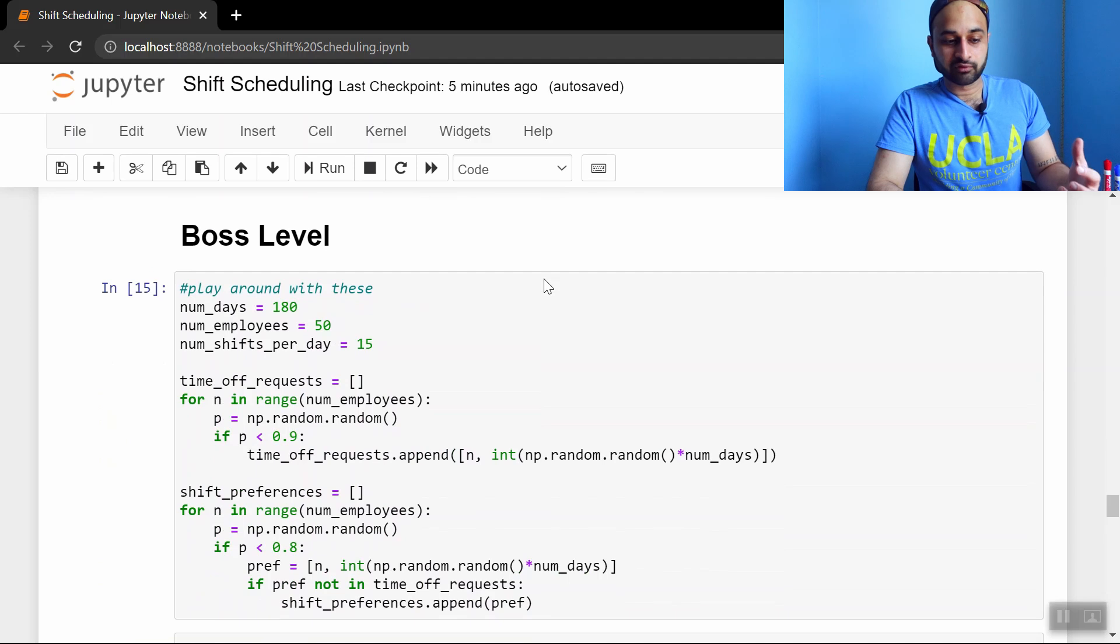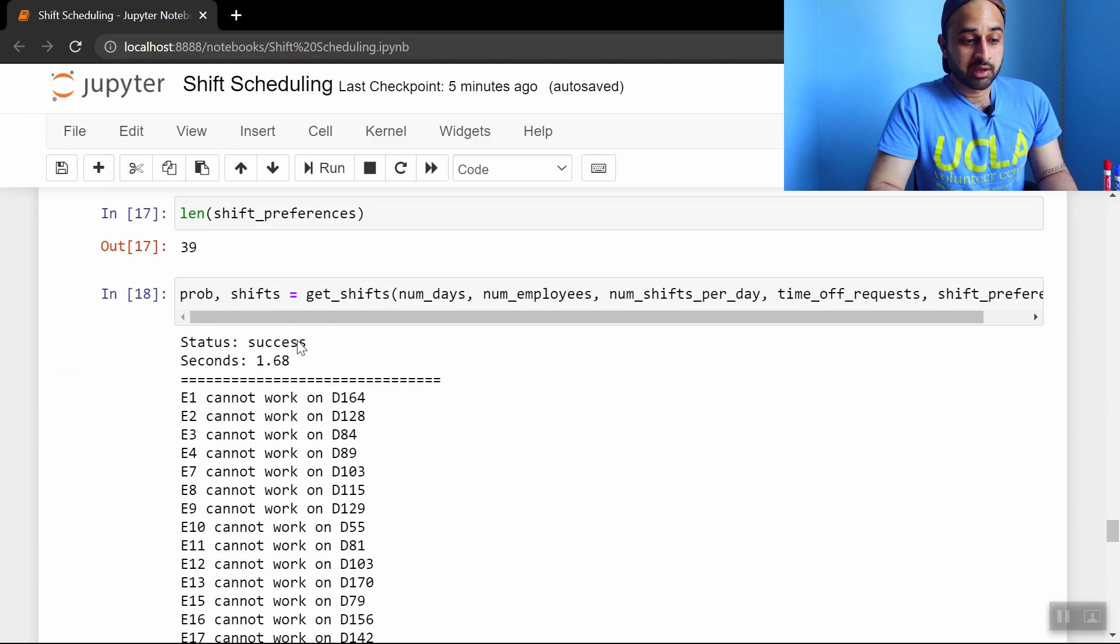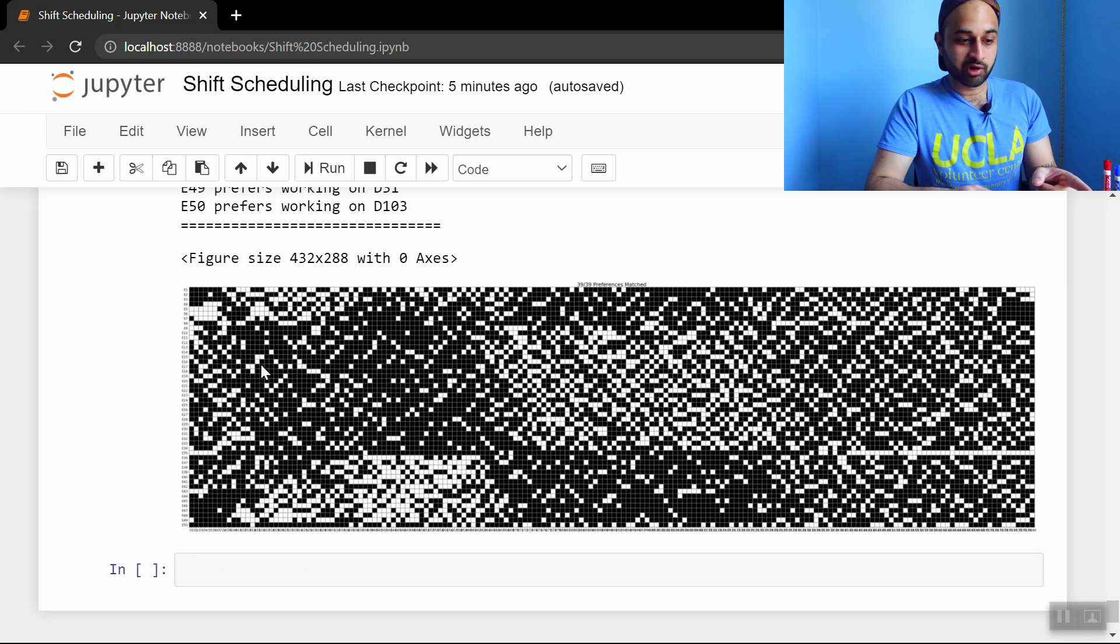And now let's do the boss level. So boss level is you're trying to schedule 180 days, six whole months of work all at once. You have 50 employees, so this is kind of a bigger company now. And you have 15 shifts per day. Seems like it could take a really long time. Definitely not something you can do by hand within any reasonable amount of time and get it to be fully optimal. But let Pulp handle it. And you see that it takes 1.68 seconds to get you this schedule. Obviously, we're not going to zoom in, but you can see all 180 days, all 50 employees got scheduled.